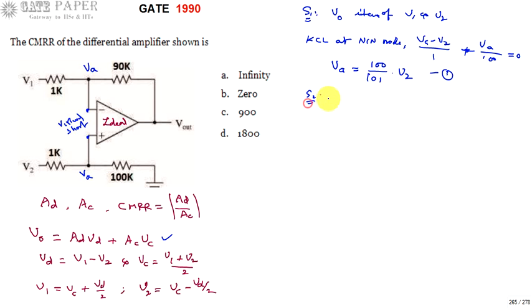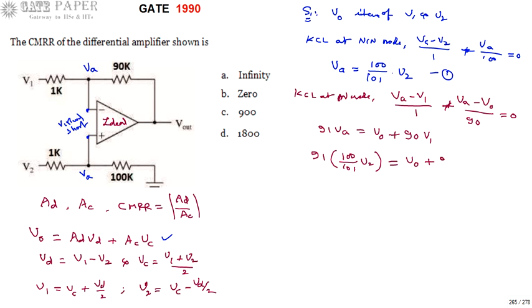Next, KCL at the inverting node: you can write it as Va minus V1 by 1 plus Va minus V0 divided by 90 is equal to 0. So 91 times 100 by 101 times V2 is equal to V0 plus 90 times V1.